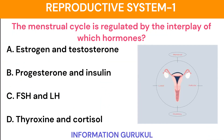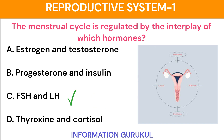The menstrual cycle is regulated by the interplay of which hormones? FSH and LH.